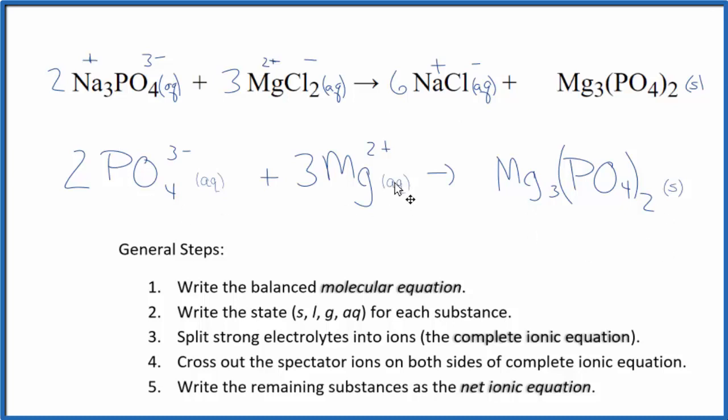So this is the balanced net ionic equation for Na3PO4 plus MgCl2. Sometimes you'll see the negative ion goes second. It really doesn't matter, but maybe it looks a little nicer.